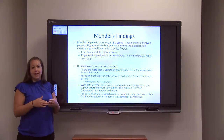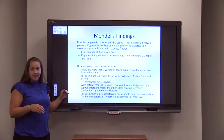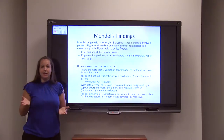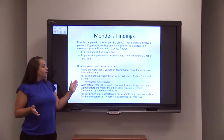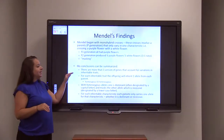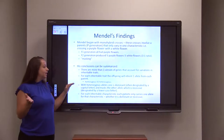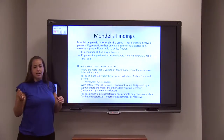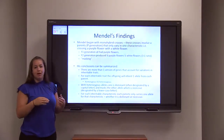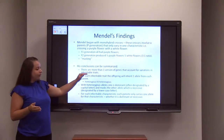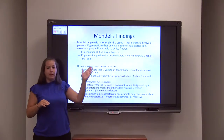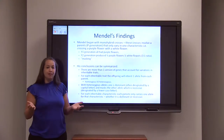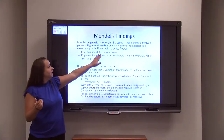His conclusions can be broken down into four basic points that we can carry throughout genetics to understand why things happen and how things are divided. The first is that there are more than one version of a gene that accounts for inheritable traits. Different inheritable traits include flower color, skin color, eye color, hitchhiker's thumb, and attached earlobes — all coded for by a gene. Each person gets one version of the gene from the mother and one version from the father. These genes may be the same or they may be different, just like purple versus white flowers.